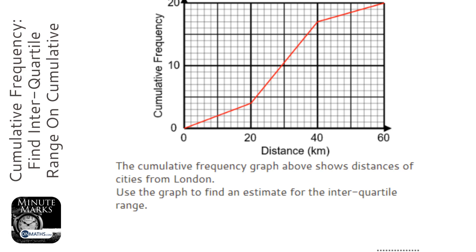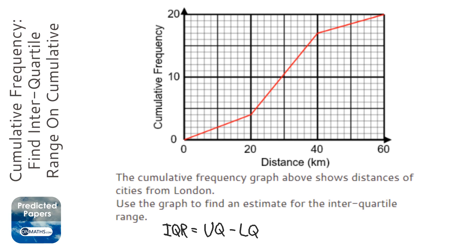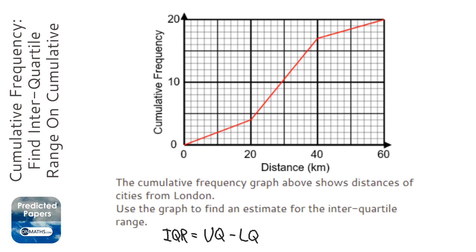Okay, so we're asked to find an estimate for the interquartile range, and the interquartile range is the upper quartile take away the lower quartile. To find the upper and lower quartile, we find out what the graph goes up to, which is 20.